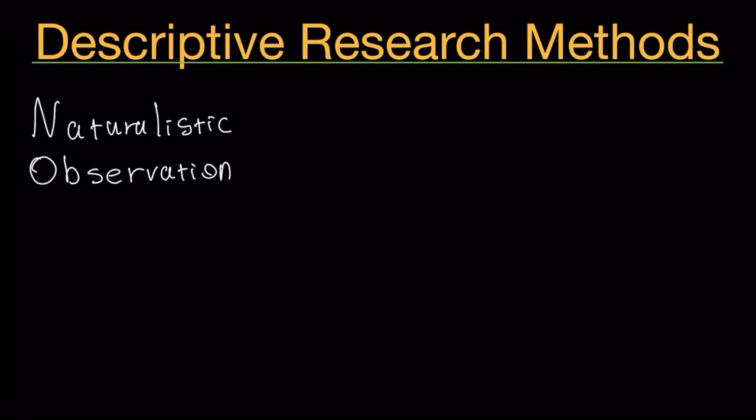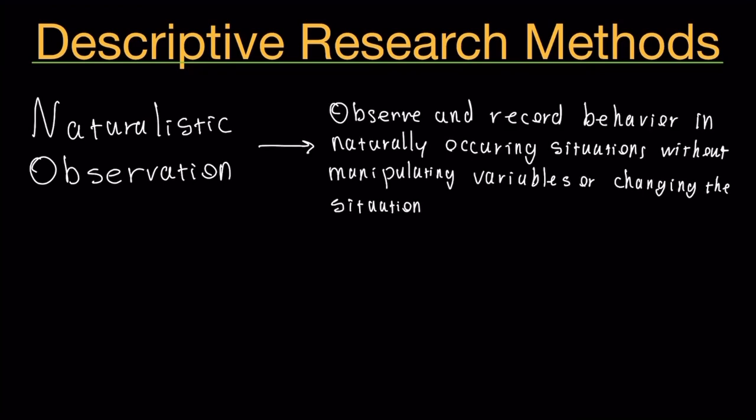Let's talk about the last descriptive research method. It is called naturalistic observation. This type of research method is observing and recording behavior that happens in naturally occurring situations without manipulating variables or changing the situation.